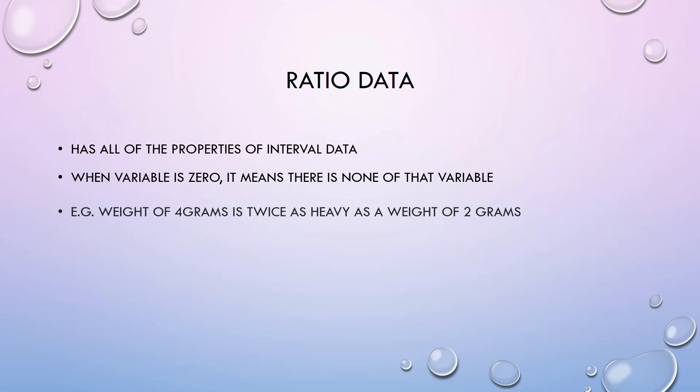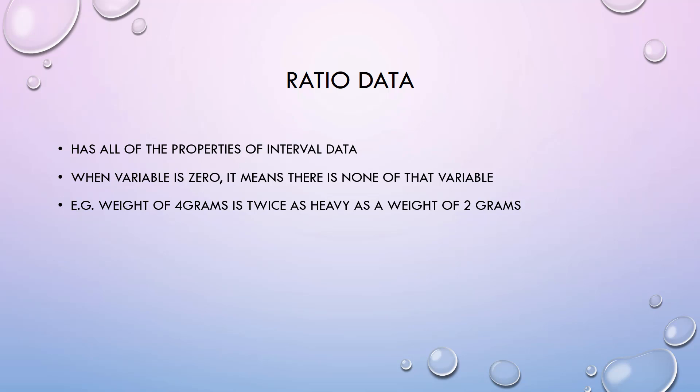Ratio data have all of the properties of the interval data. It also addresses the drawback of the interval data type by defining a zero value. For example, weight is a ratio variable, so a weight of 4 grams is twice as heavy as a weight of 2 grams.